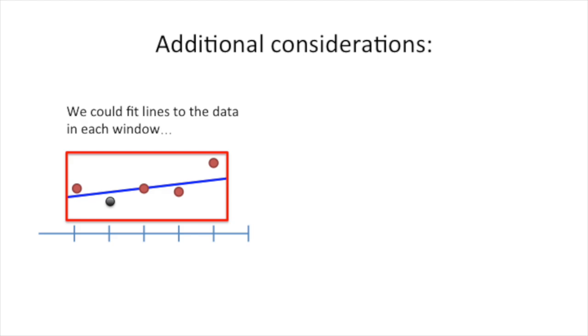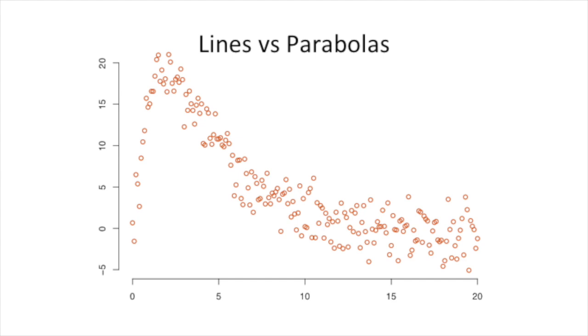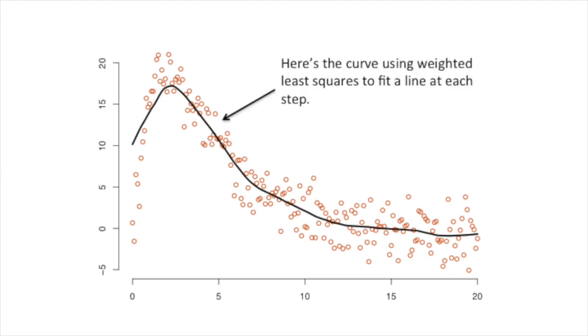We could fit lines to the data in each window, or we could fit parabolas. The choice is yours. Here, let's look at a more complicated data set to see the effect of using lines versus parabolas. Here's the curve using weighted least squares to fit a line at each step. Here's the curve fitting parabolas at each step. As you can see, the parabola fits the data just a little bit better.